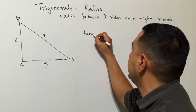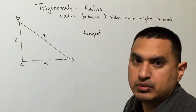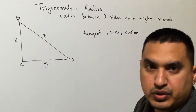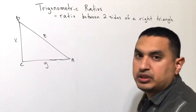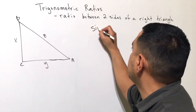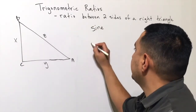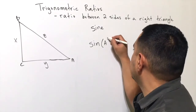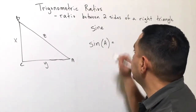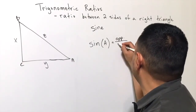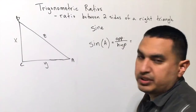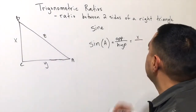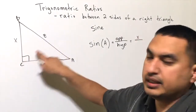We've talked about the tangent ratio before, and now we're introducing the sine ratio and the cosine ratio — those are the three trig ratios we'll cover. The sine ratio, abbreviated sin (without the e), uses angle A. The sine ratio is the opposite leg over the hypotenuse. The opposite side across from angle A is x, and the hypotenuse across from the right angle is z.